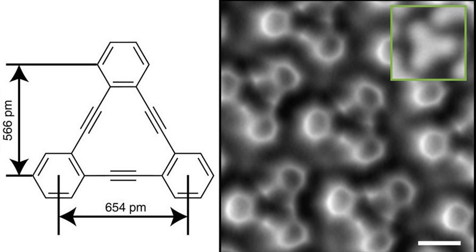Annulenes may be aromatic like benzene, non-aromatic like 10-annulene, or anti-aromatic like cyclobutadiene and 12-annulene.